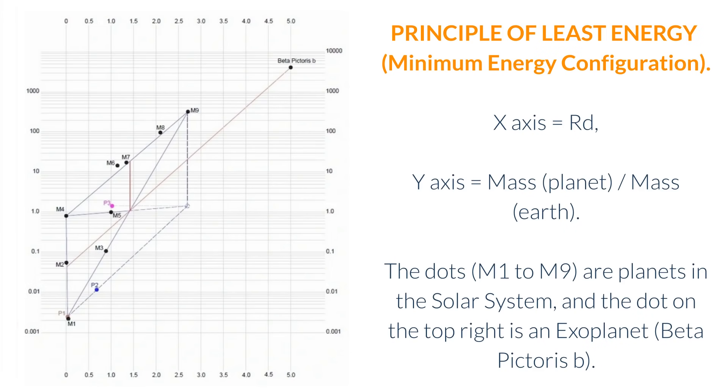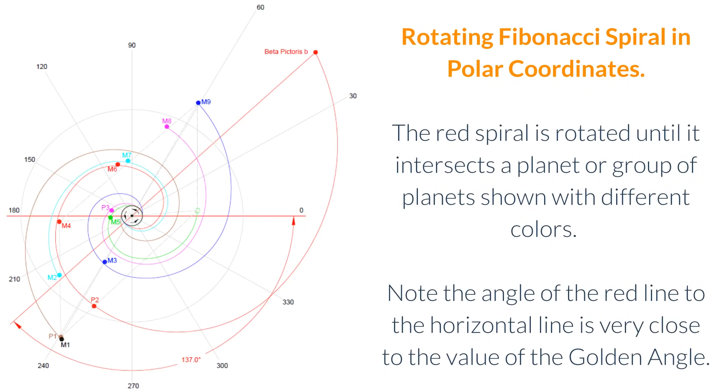And the dot on the top right is an exoplanet, Beta Pictoris B. Rotating Fibonacci spiral in polar coordinates. The red spiral is rotated until it intersects a planet or group of planets shown with different colors. Note the angle of the red line to the horizontal line is very close to the value of the golden angle.